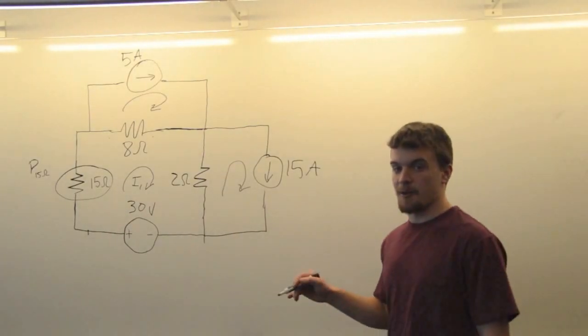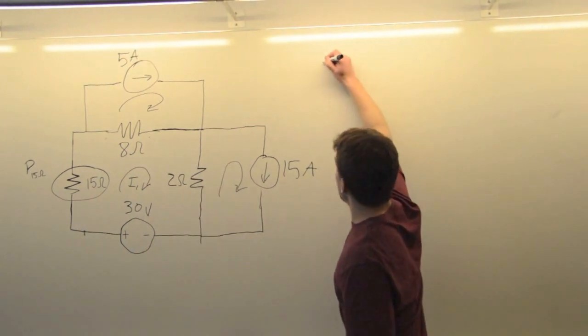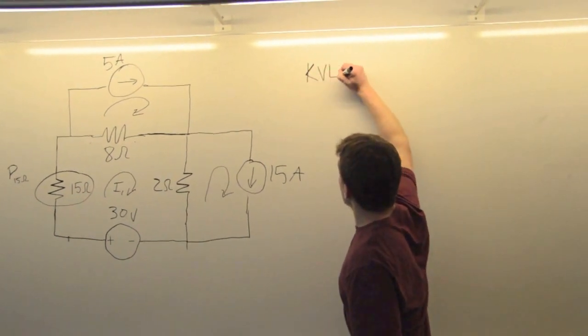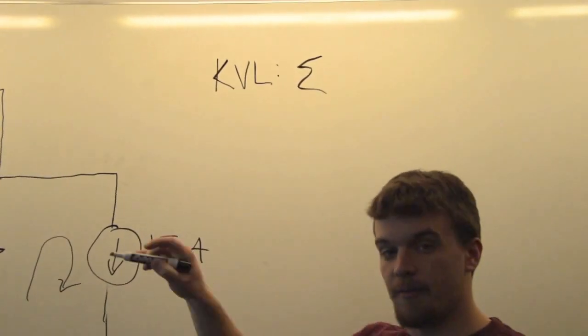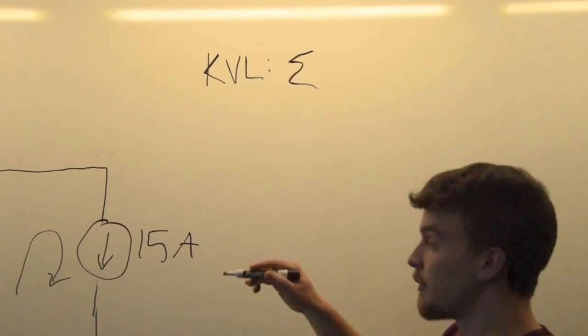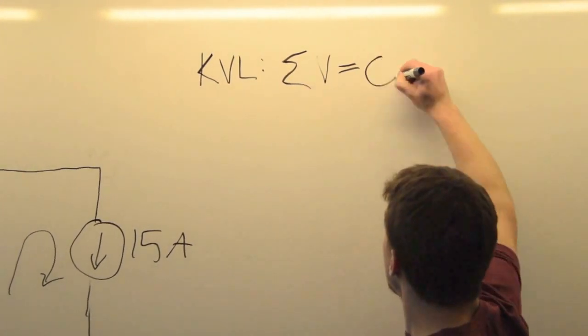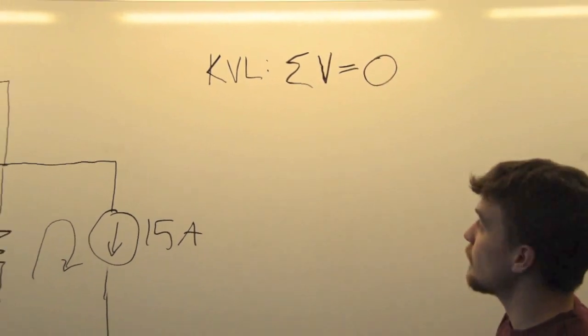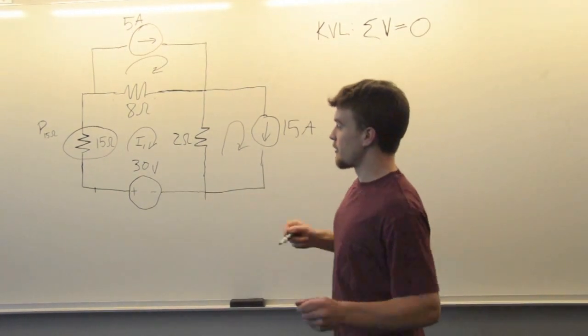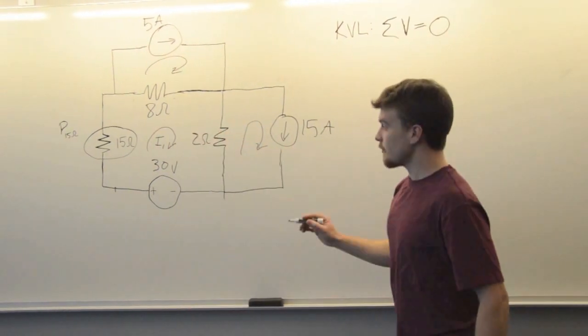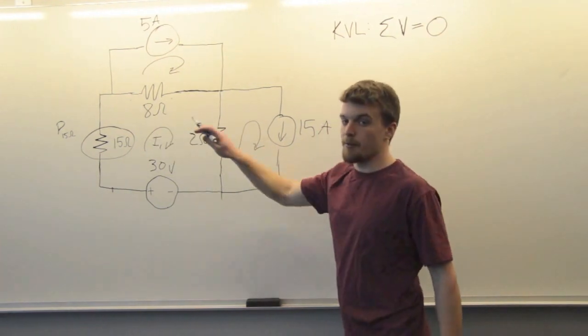In mesh analysis we use KVL, which states that the sum of all the voltage drops around any closed loop is equal to zero. So we will use that principle to solve for this loop current. We'll find the sum of the voltage drops around this loop and sum them to zero.